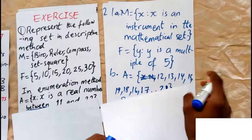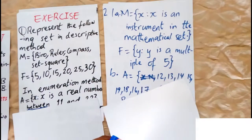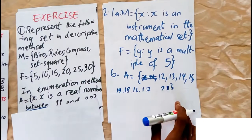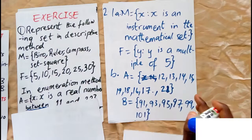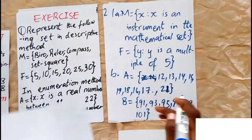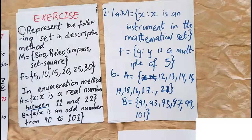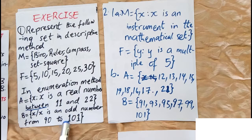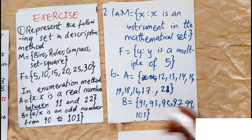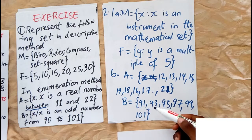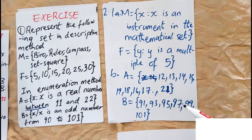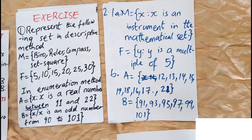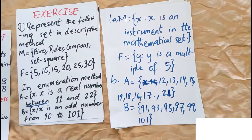Remember the order does not matter. The next set is B: x such that x is an odd number from 90 to 101. So we have 91, 93, 95, 97, 99, 101.